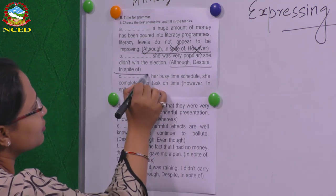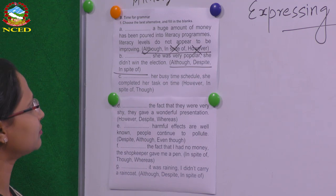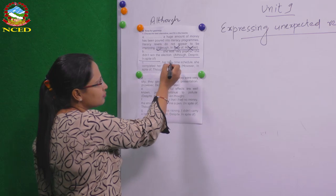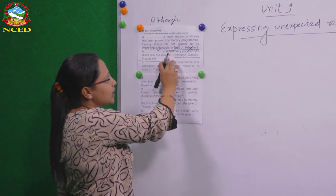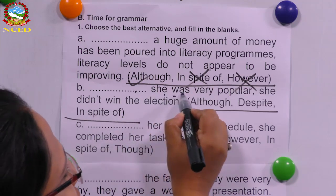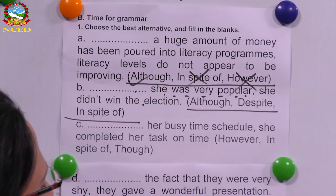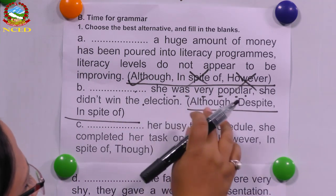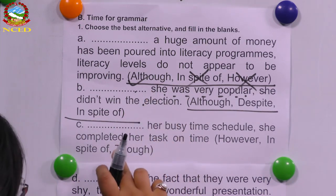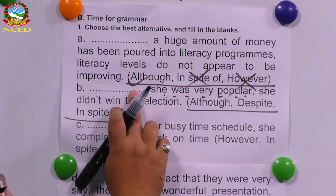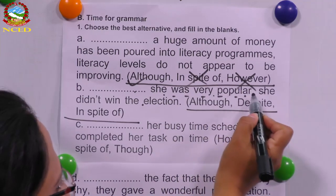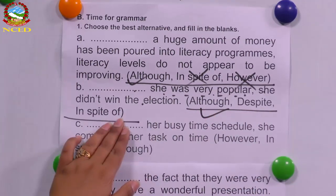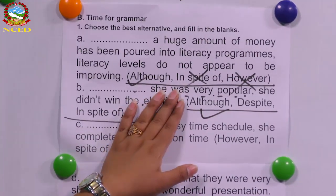The options are 'although,' 'despite,' and 'in spite of.' 'She was very popular; she didn't win the election.' There is a gap before the situation 'she was very popular.' She didn't win the election is the unexpected result. Now there is a clause 'she was very popular,' so what should we use? 'Although' — because 'despite' and 'in spite of' need a noun phrase.